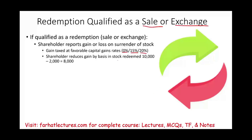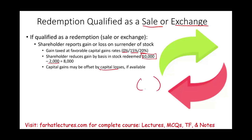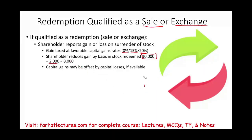The shareholder reduces gains by the basis in the stock. So if you sold for $10,000 and your basis is $2,000, you have a gain of $8,000. Capital gains might offset capital losses if available — if you have losses of $8,000 from other stocks, the gains and losses will offset each other and you're not responsible for any taxes. That's why capital gains are beneficial.